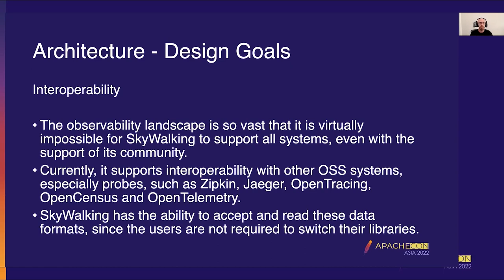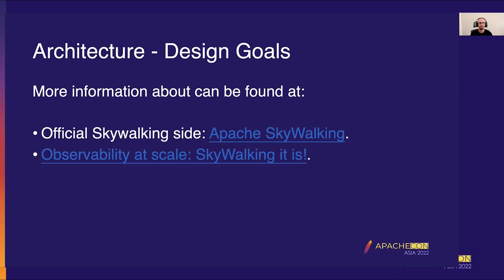Skywalking should be interoperable. It supports many different systems and can operate seamlessly with open source systems like Zipkin, Jaeger, OpenTracing, OpenCensus, and OpenTelemetry. Skywalking can accept and read data from many different sources and doesn't require you to switch any library to collect metrics or traces. For more about the design goals, check the Apache Skywalking official site or read the blog post 'Observability at Scale'.